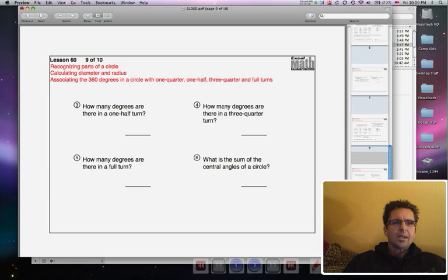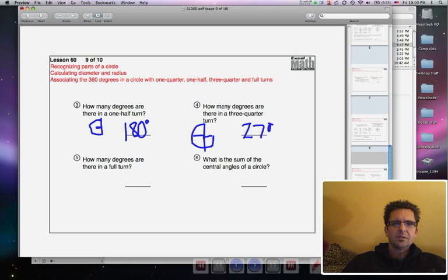How many degrees are in one half of a turn? That's coming around like this. That's forming like two right angles. So there's 180 degrees in a half a turn. How many degrees are there in three quarters of a turn? That's all the way around until here. So basically you're forming three right angles. Three times 90 is 270 degrees.